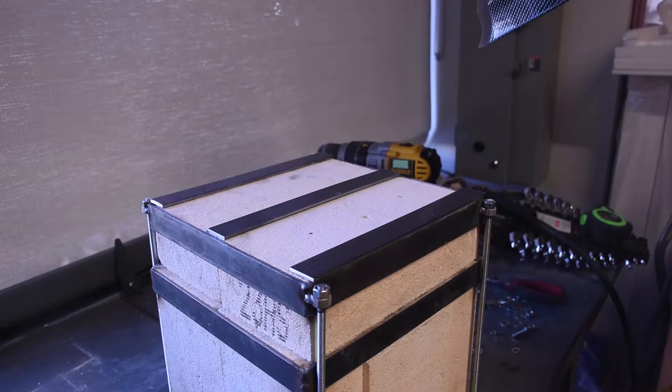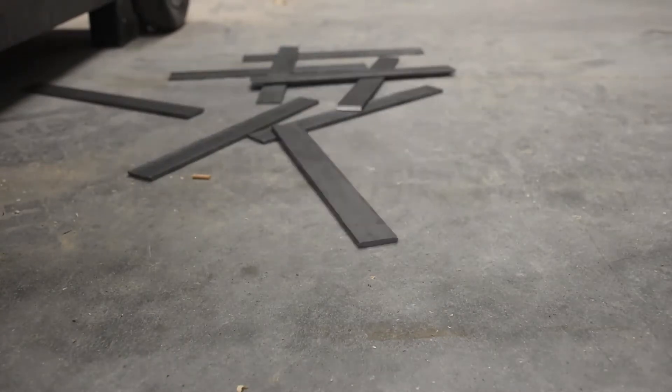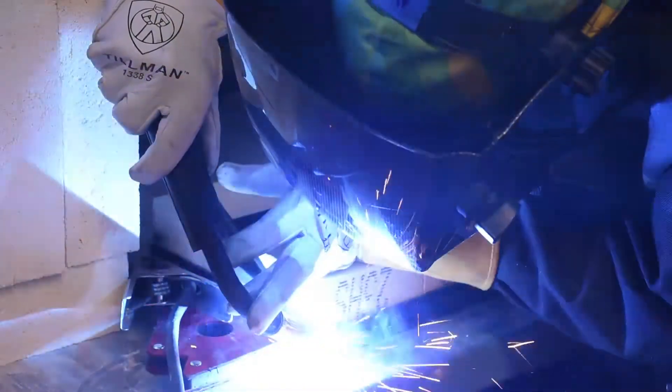Next up was the cage. I made it in much the same way as my previous foundry. I cut a bunch of nine and a half inch pieces of one by eighth inch steel. Then I welded it in place around my bricks.